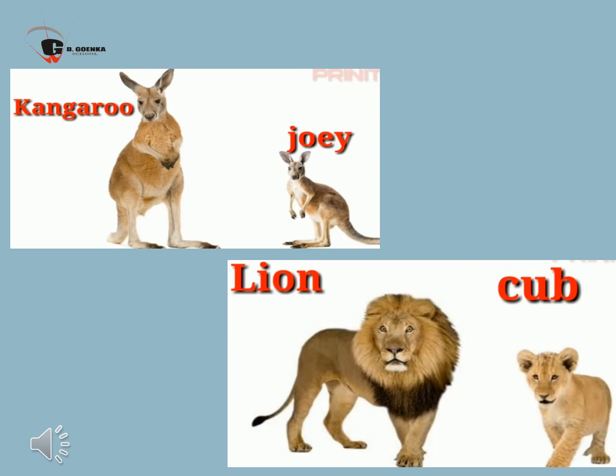Next is deer — Fawn. Baby of a deer is fawn. The baby of a kangaroo is joey. Kangaroo is a strong animal. The young kangaroo, or joey, is born at a very immature stage when it is only about 2 cm long and weighs less than a gram. Immediately after birth, it crawls up to the mother's body and enters the pouch.